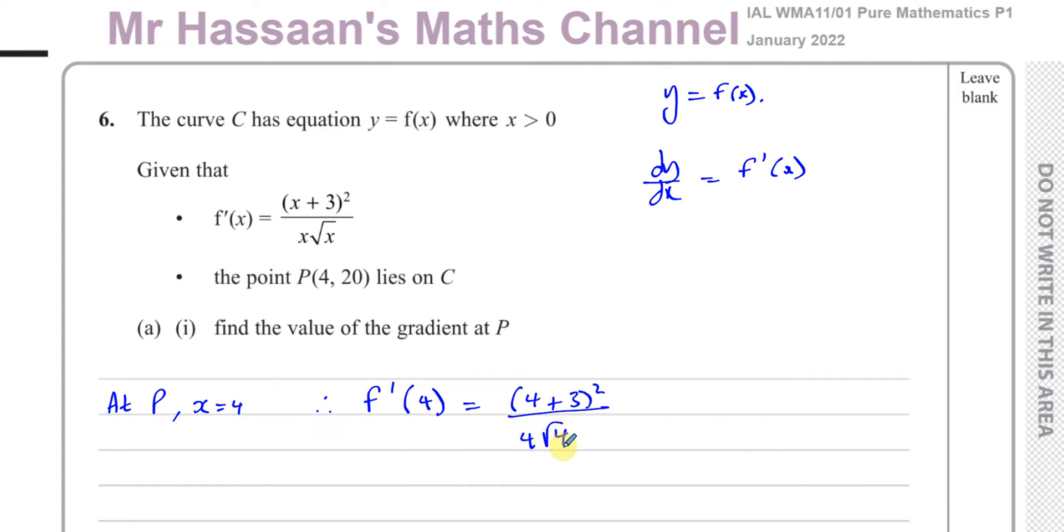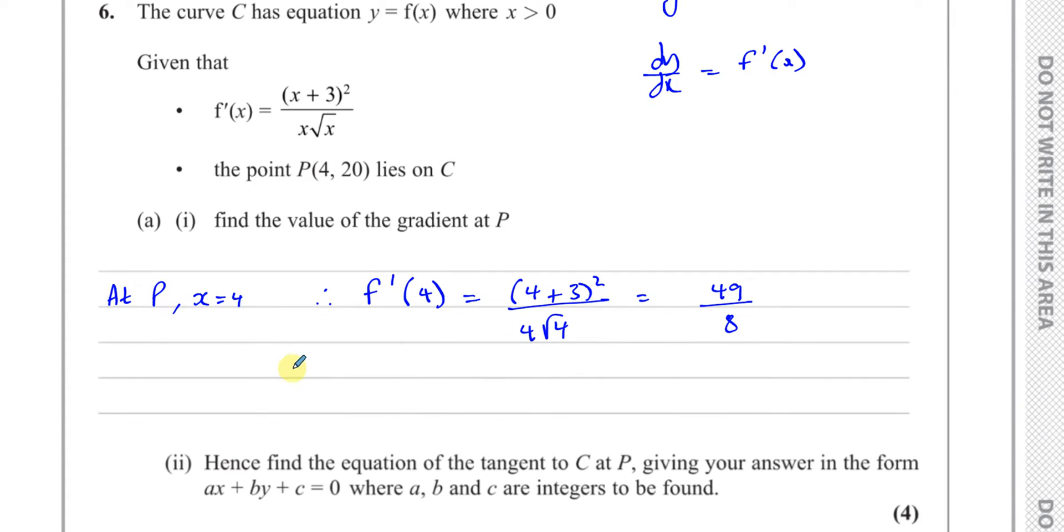You're going to get 4 plus 3 squared over 4 times the square root of 4, which gives us 7 squared, which is 49, over 4 times root 4, which is 8. That is the gradient of the curve at P. So we can say the gradient of C at P is equal to 49 over 8.